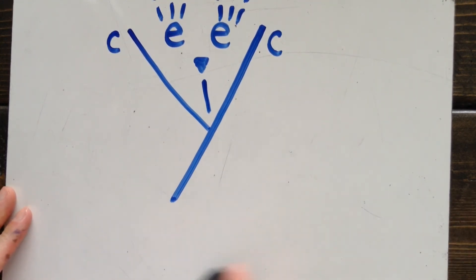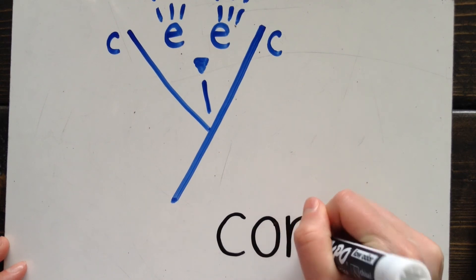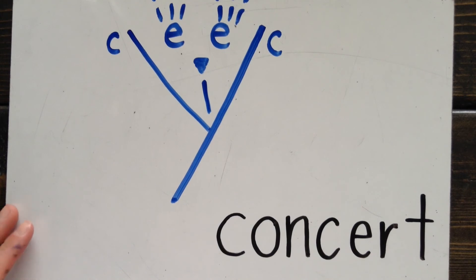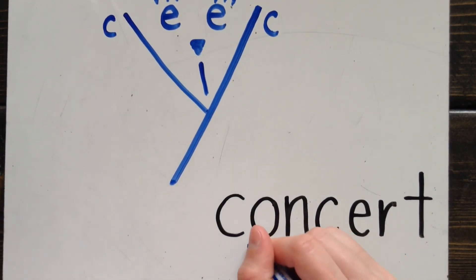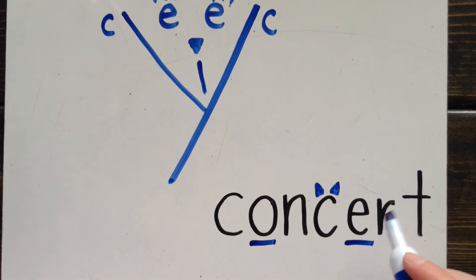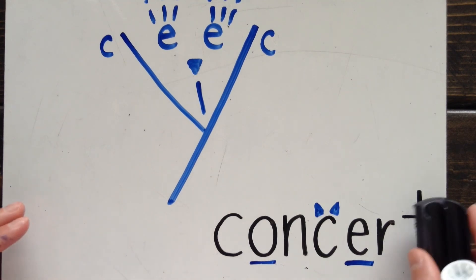Some words are exceptionally tricky because they have two Cs, one soft and one hard, in the exact same word. Here's an example. This is the word concert. There are two Cs in this word. The first C is hard. The second C is soft. I know this because E is in my Cici Cat picture. O is not. Concert has two Cs, one of each type.